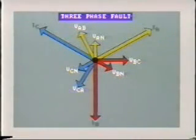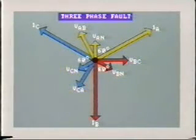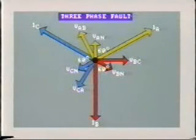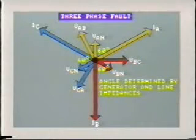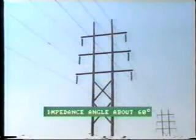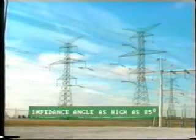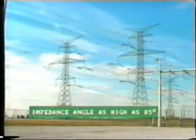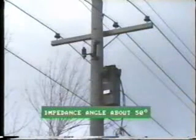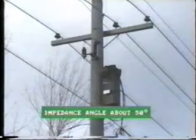The magnitude of line current increases greatly, and it is lagging by approximately 60 degrees on its respective phase voltage. This angle is determined by the nature of the system impedance to the fault — that is, the generator impedance and the line impedance. The line impedance predominates, and for a 115 kV transmission line this is usually about 60 degrees. High voltage lines, 230 kV and up, may have impedance angles as high as 85 degrees. Conversely, low voltage distribution lines usually have a line impedance angle of about 50 degrees.